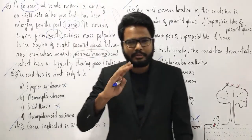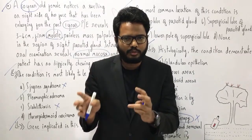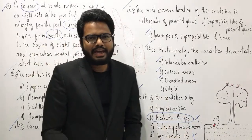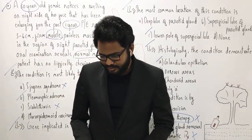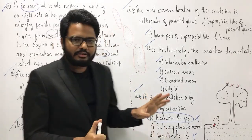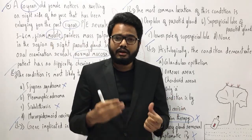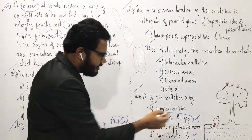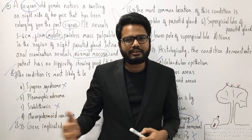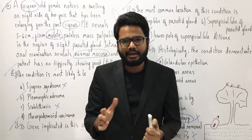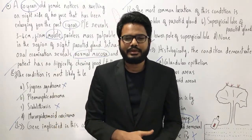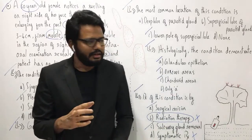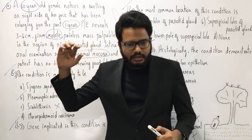So you can rule out option D as well. Looking at options A and C: various case reports mention enucleation, partial parotidectomy, and total parotidectomy. So depending upon the extent of the spread of the lesion, the answer can be either A — surgical excision — or C — salivary gland removal. Partial, subtotal, or total parotidectomy, and even enucleation, have been mentioned. So you can go with A and C.